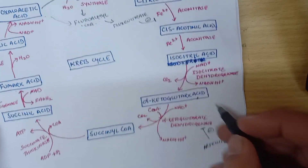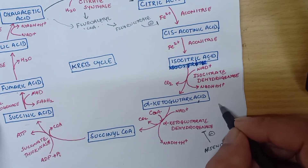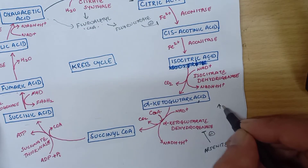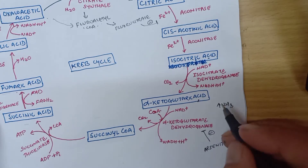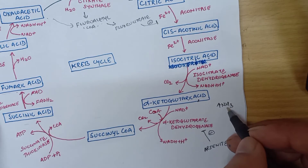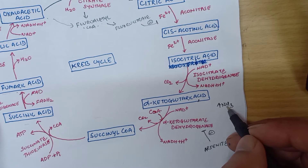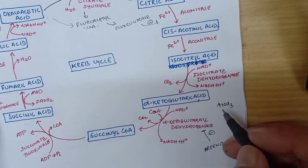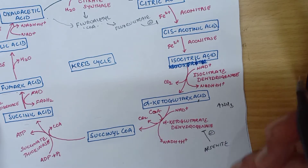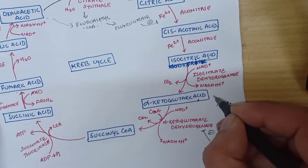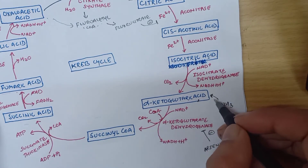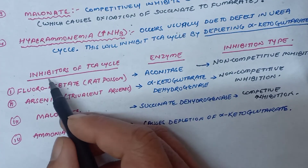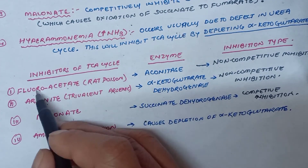Another inhibitor of the TCA cycle is hyperammonia, that is ammonia intoxication. When there is an increase in concentration of ammonia — which can be due to a defect in the urea cycle — this will inhibit the TCA cycle by directly depleting alpha-ketoglutaric acid.